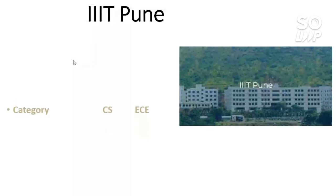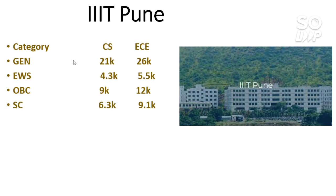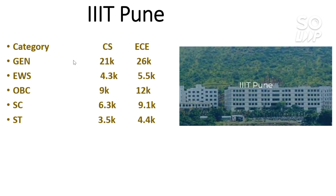Next is IIIT Pune. Here is the cutoff for CS and EC — there is no separate male/female cutoff. For General — CS 21,000 and EC 26,000. For EWS — CS 4,300 and EC 5,500. For OBC — CS 9,000 and EC 12,000. For SC — CS 6,300 and EC 9,100. For ST — CS 3,500 and EC 4,400. IIIT Pune is one of the best IIITs in India and you should surely join if you get the opportunity.